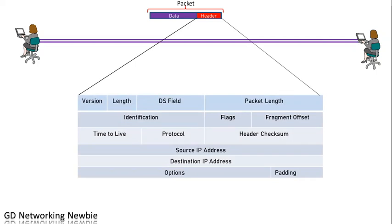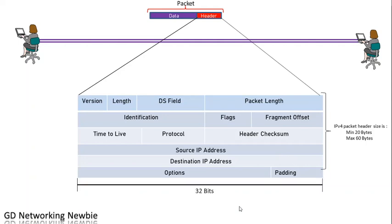If we zoom in on the header part of the packet, we can see different named fields. All of these fields are represented as bits. Before going further, I want to emphasize that from one side to the other of each row, there are 32 bits.